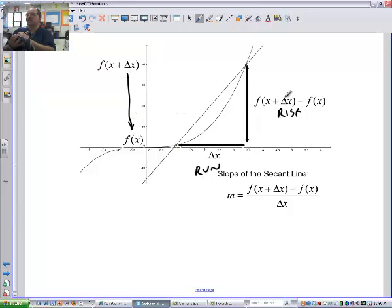How far apart are they? They're f of x plus delta x minus the f of x. So my rise is the f of x plus delta x minus the f of x. And my run is just delta x. So maybe it looks familiar from some of the things we've worked on before. So again, that's going to give me an approximate slope.